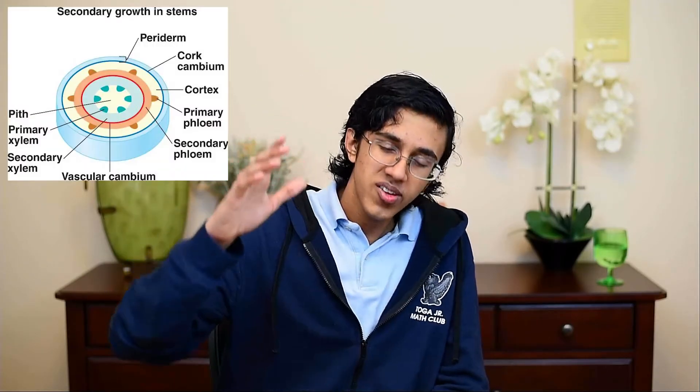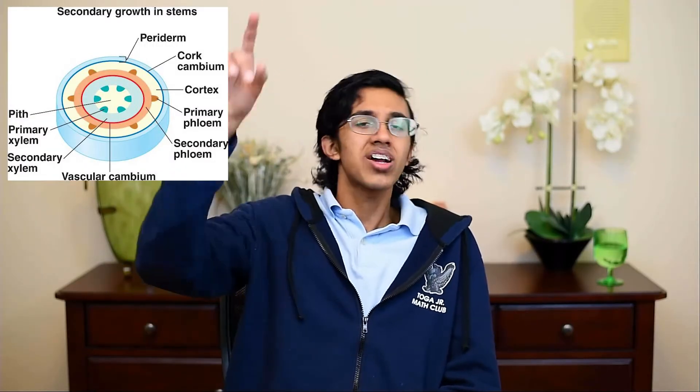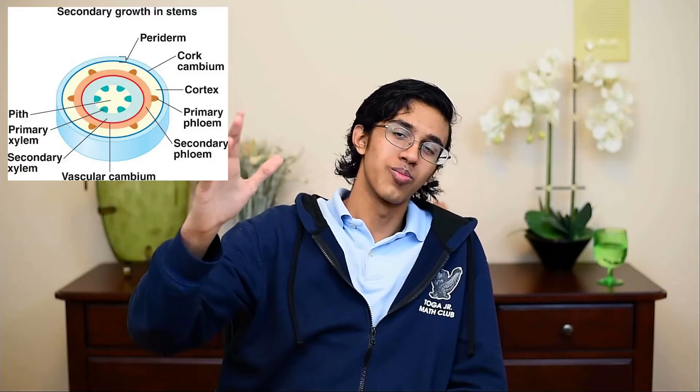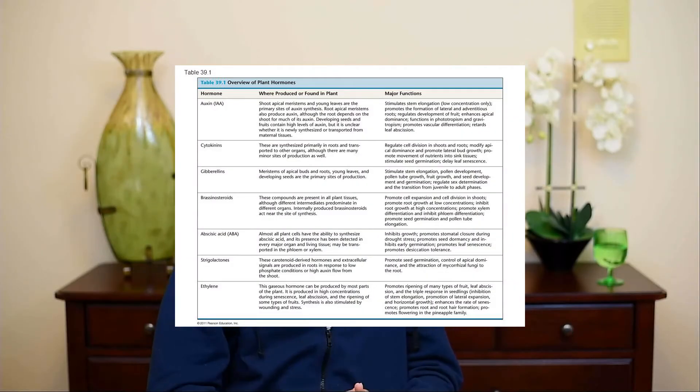Remember the layers of the plant, because that actually shows up and you have to know it very well — if you get one thing switched you're automatically going to lose a point. Plant hormones are also very important. You have to know auxins, gibberellins, cytokinins, and abscisic acid — you have to know what all of them do to a pretty specific degree because the test asks pretty specific questions about that. You should also know how long-day and short-day plants work and how the hormones function in that context.